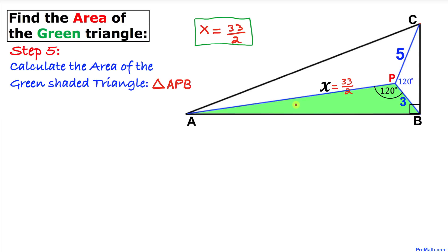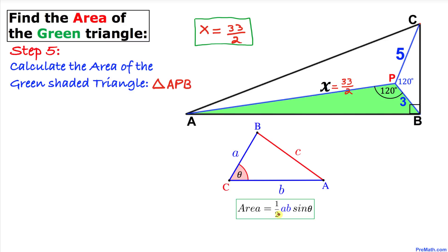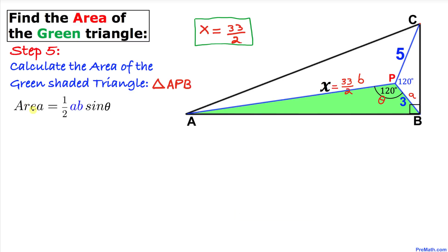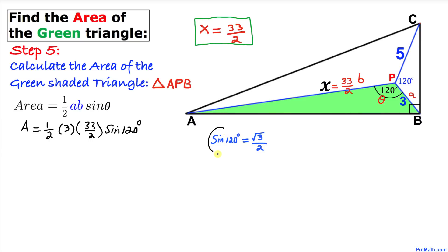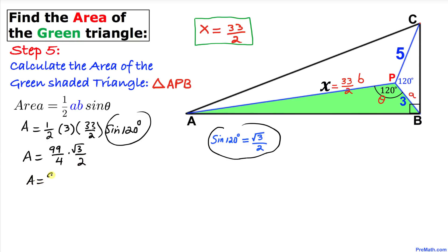Here's our final step: we calculate the area of green triangle APB using the formula Area = (1/2) × a × b × sin(θ). In our case θ = 120°, a = 3, and b = 33/2. So Area = (1/2) × 3 × (33/2) × sin(120°). Since sin(120°) = √3/2, this becomes (99/4) × (√3/2) = 99√3/8.